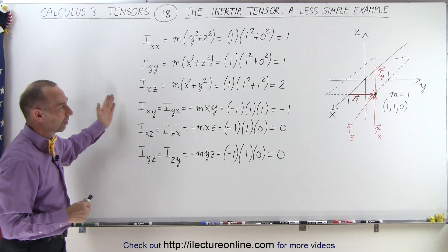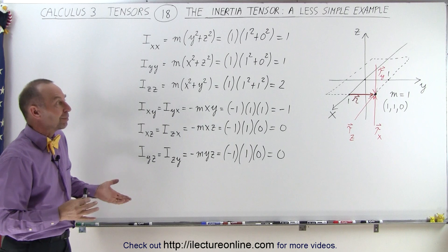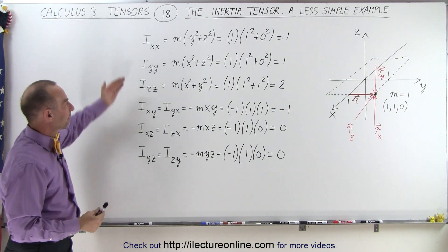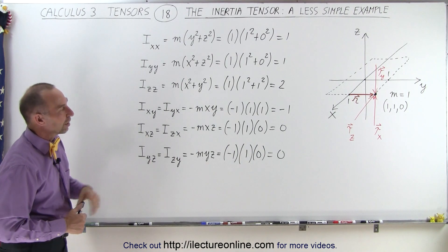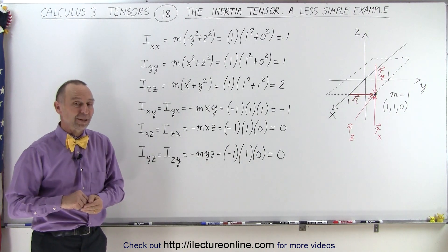All right, so that's what we mean by a less simple example. We're able to figure out all the elements, all nine elements of the inertia tensor going through this procedure. And that's how it's done.